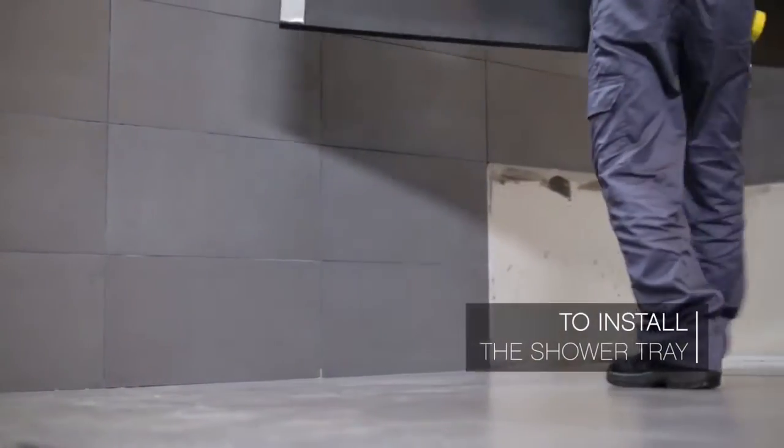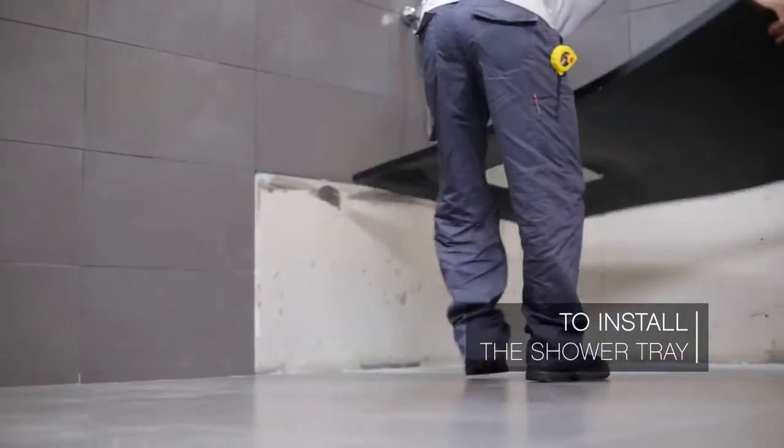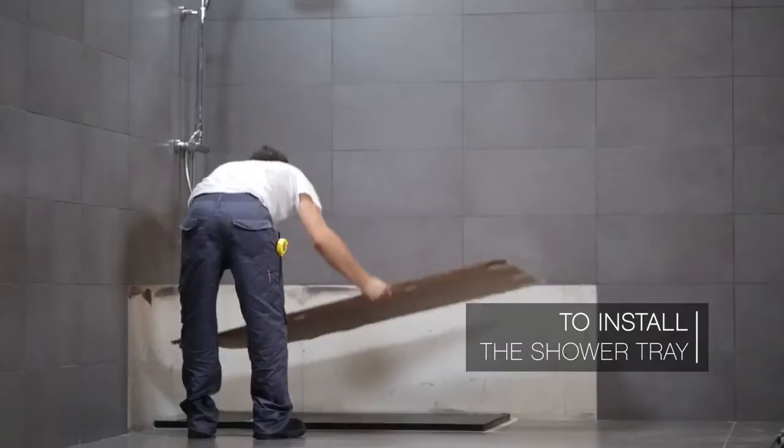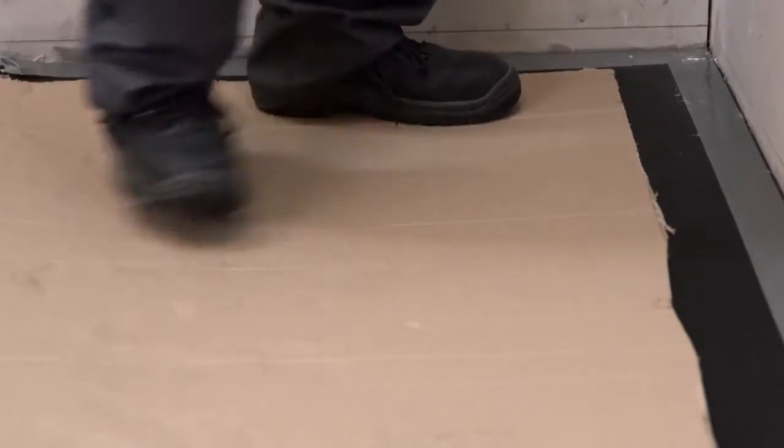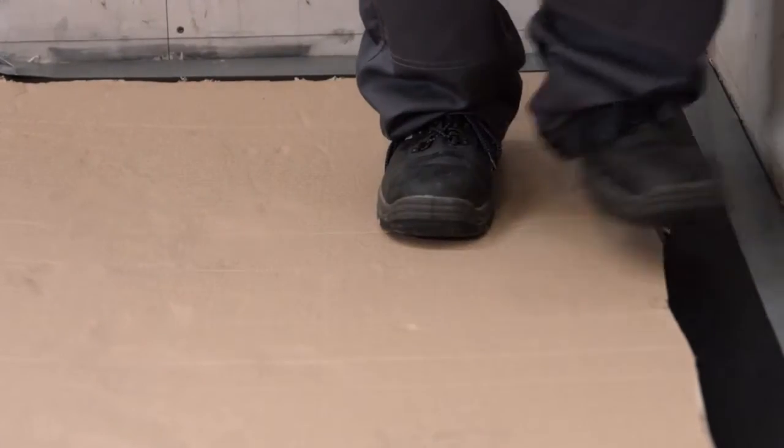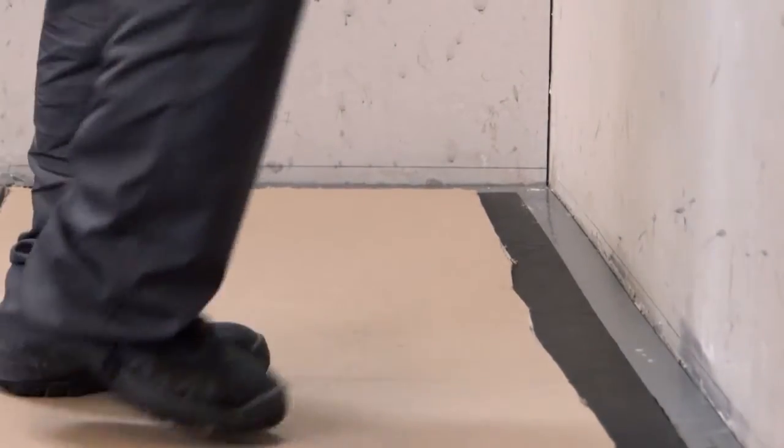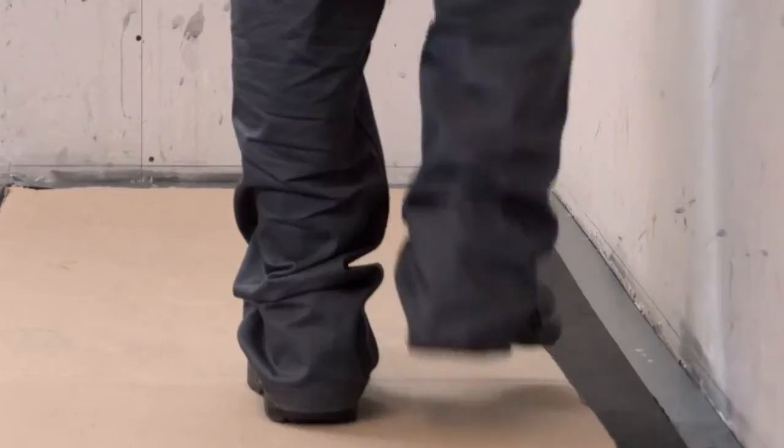Once fixing material is applied, install the shower tray. Protect the shower tray using cardboard from the packaging and compact it. The shower tray base must come into contact with the polyurethane filler applied to the base.